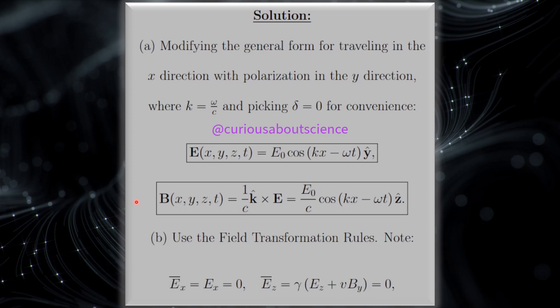So, part B, we have to use the transformation rules, noting that E bar x equal E x equals 0, and E z bar is equal to gamma (E z plus V by y) equals 0. Again, since where we're defined in z and y, we just have to be wary of how these vectors are actually defined, as far as one component in the coordinate spaces themselves.